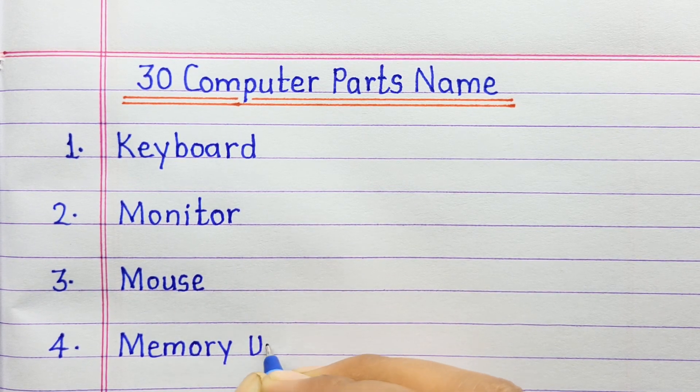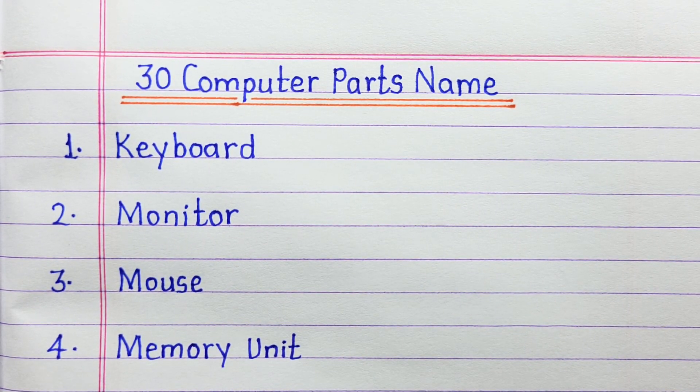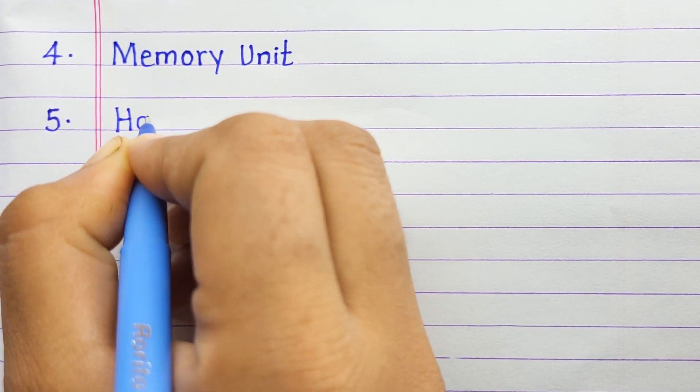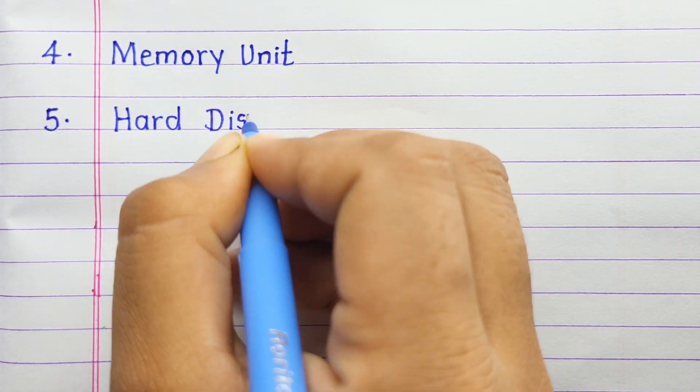Number four: memory unit. Number five: hard disk.